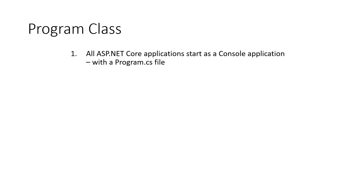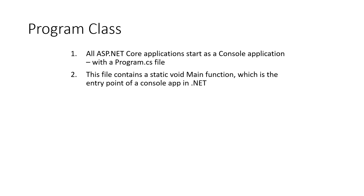All ASP.NET Core applications start as a console application with a program.cs file, just like a .NET Framework console application that you are all familiar with, which has a main entry point — the static void main. ASP.NET Core also starts every application, even a web application, as a console application first, and this program file contains a static void main function which is the entry point.